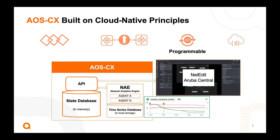The next principle is programmability. AOS CX offers an application program interface, or API, that makes the state database accessible from both inside and outside the system. For example, an application or script running on another network station can log in to a CX switch and interact with the database to learn and change the state of the different software and hardware elements in the switch. Using the API, you can automate operations, collect data, and perform different types of analysis of the network behavior and state.